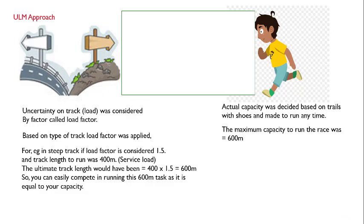For example, let us say you have to run in a steep track and I define a load factor of 1.5. If you have to run for 400 meters on a steep track, before assigning you to the race I multiply the track length by 1.5: 400 × 1.5 = 600 meters. This is the ultimate track length — 600 meters — which matches your maximum capacity of 600 meters. So you can easily run this ultimate track length and compete successfully.